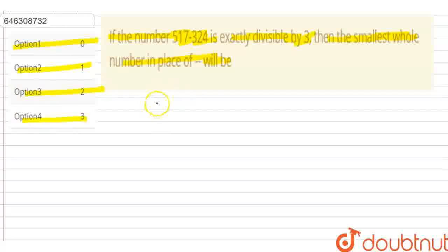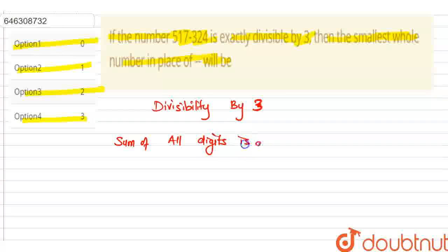So we have divisibility by 3. The rule is that the sum of all digits is divisible by 3.